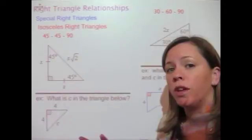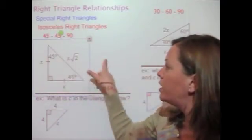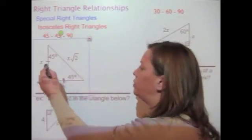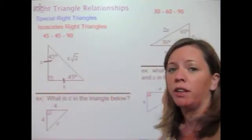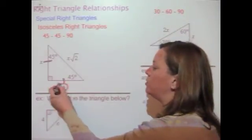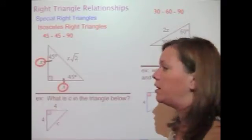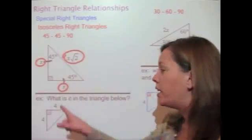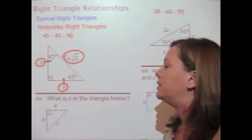You're going to look for two things: either a 90-degree angle and a 45-degree angle, or a 90-degree angle and two congruent sides — look for those congruent marks. If you have a triangle like this, the sides have a very special relationship. The two legs are the same, so we call them x. The hypotenuse is going to be x times the square root of 2, written as x√2.